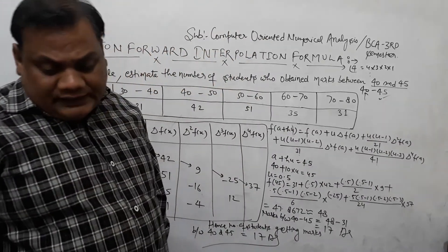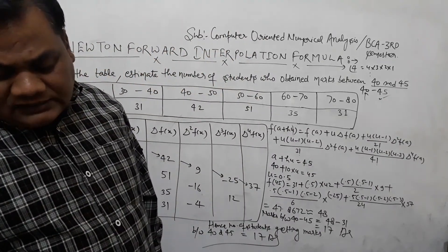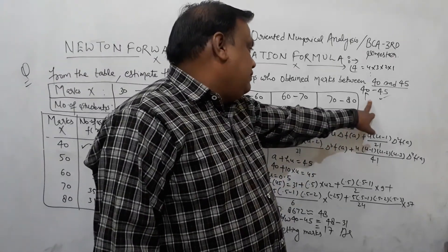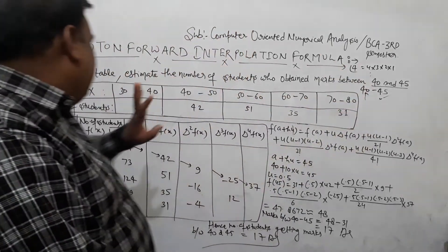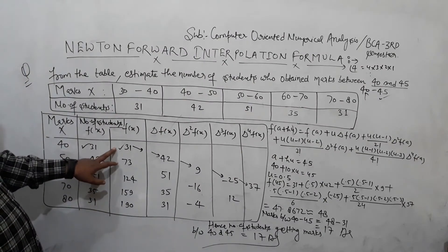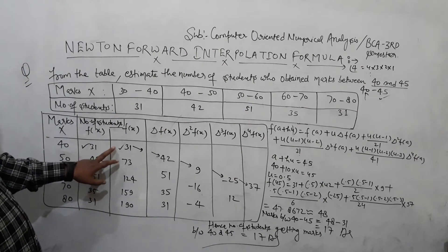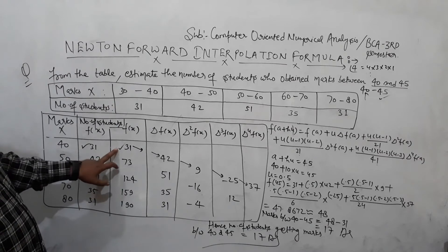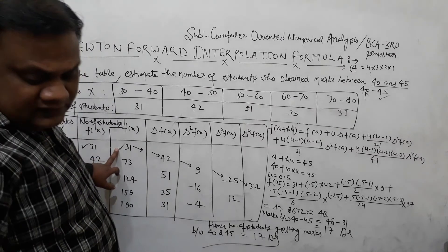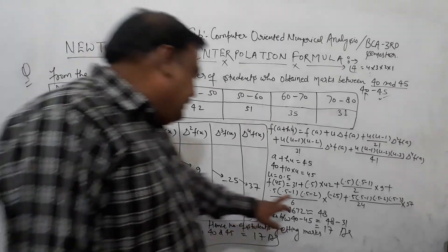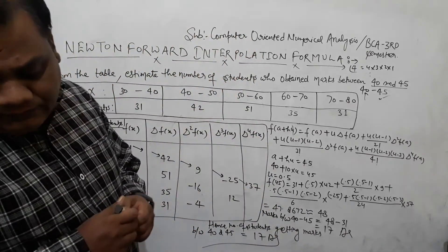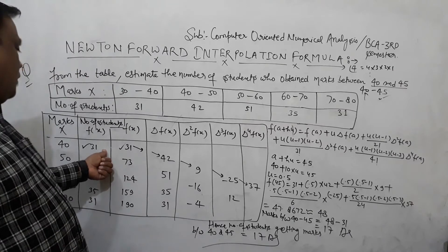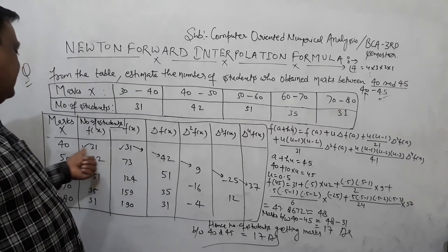The number of students getting marks less than 40 is 31, which is given directly in the table. The number of students getting marks less than 45, calculated using Newton Forward Interpolation, comes out to be 48.